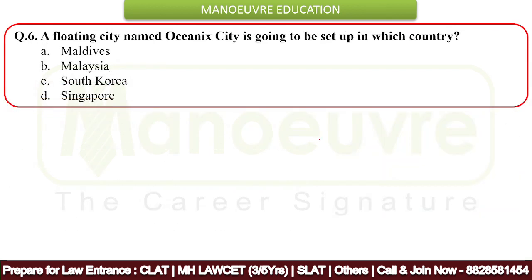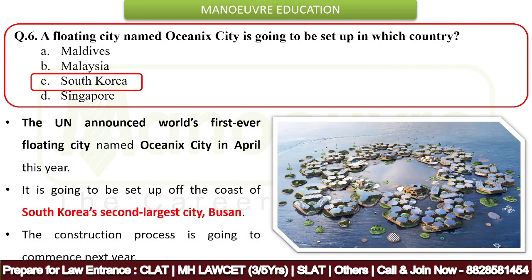Next question: the floating city named Oceanix City is going to be set up in which country? The correct answer is South Korea — option C. You can tell me the capital of South Korea in the comment section. The United Nations announced the world's first ever floating city named Oceanix City in April. It is going to be set up off the coast of South Korea's second largest city, Busan, and construction is going to commence next year.